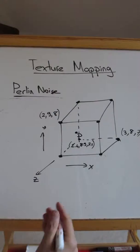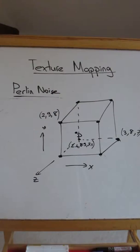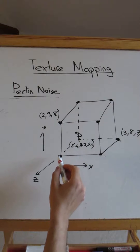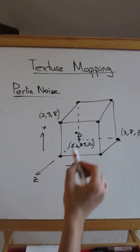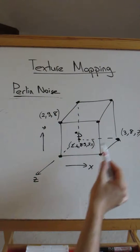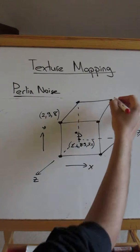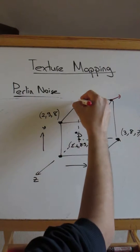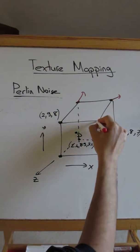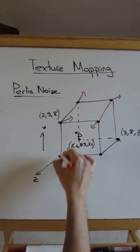Using this process, you can compute the integer coordinates of every lattice point. There will be eight points surrounding our point P at which we want to compute the noise value. Now the next thing is going to be finding the edge vectors, the gradient vectors at these lattice points. So what are these vectors?